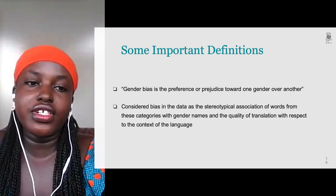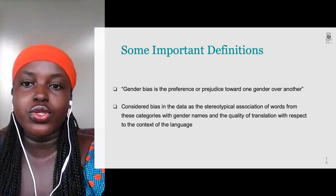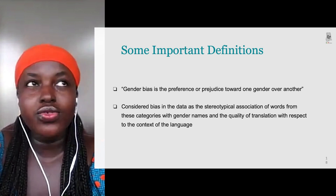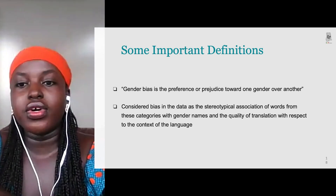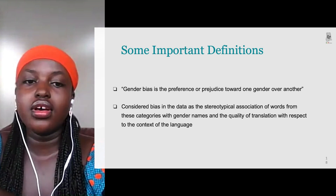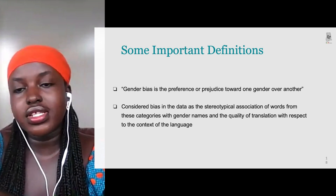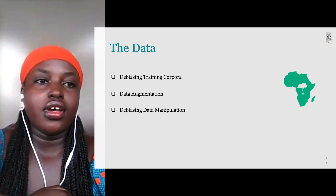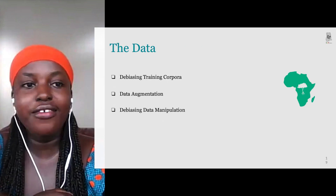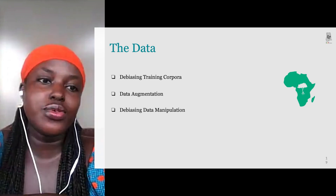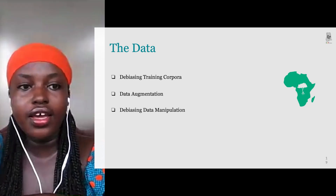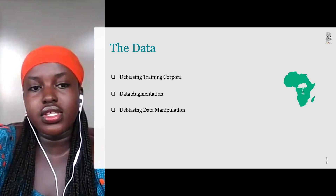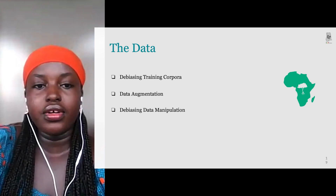In my work, I define gender bias as prejudice towards one gender over the other — specifically examining the association of words from gender name categories and the quality of translation with respect to language context. I consider translation quality for both feminine and masculine sentences. I focused heavily on the datasets, examining bias in the training corpus used for Kaya AI, and tried to augment and manipulate the data to be more representative by including more feminine sentences and characters.